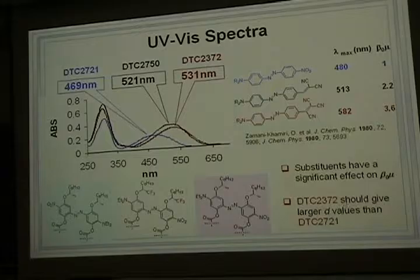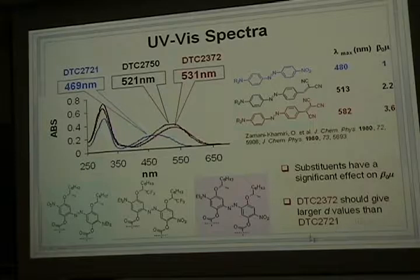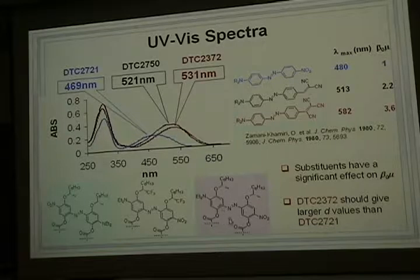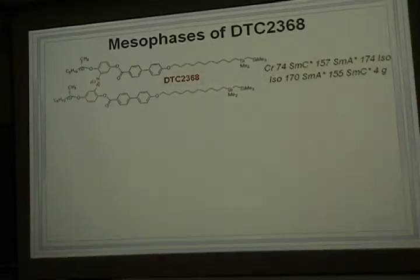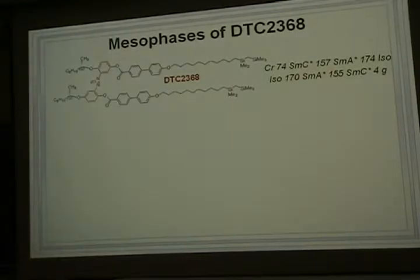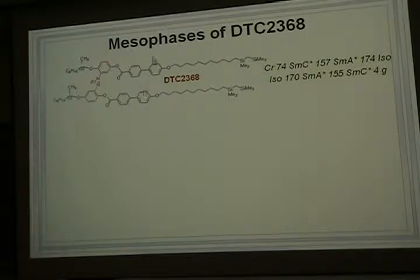This compound, 2372, should give larger beta values than the others. So that is why we are going to choose this compound for SHG measurement. We will show you how to characterize the ground state ferroelectricity of this material. Since the diamond-like material has a strong absorption band at 532 nm, we are going to dilute this material for SHG measurement. That is why we chose the host material. We are going to use compound 2368.